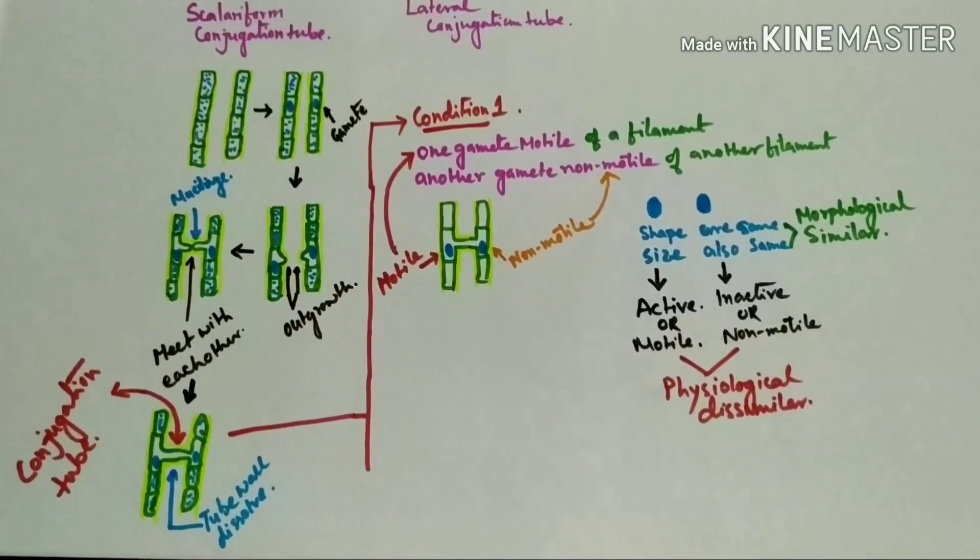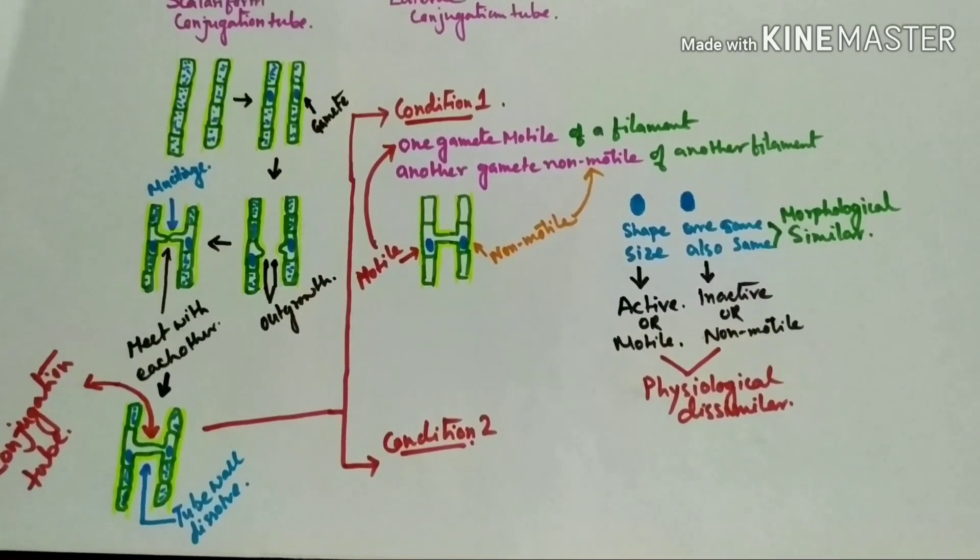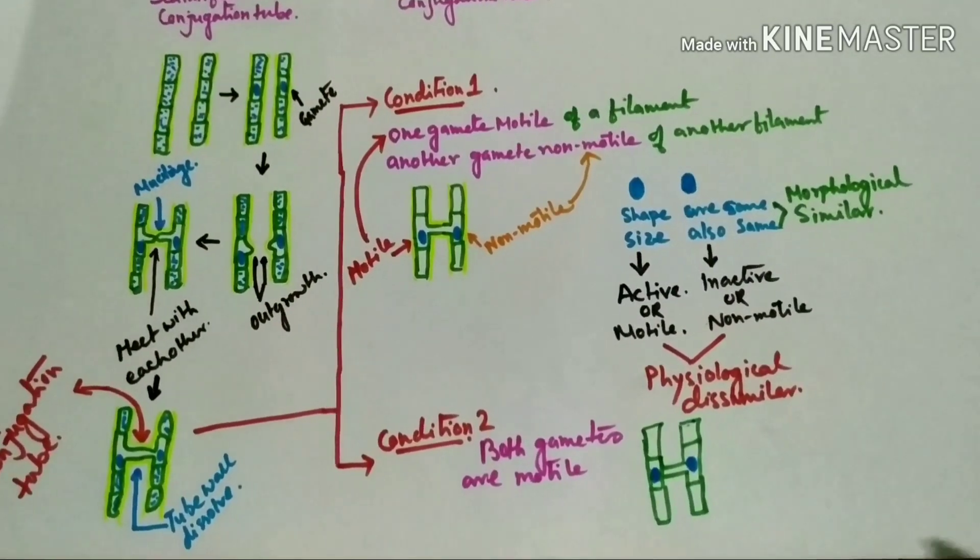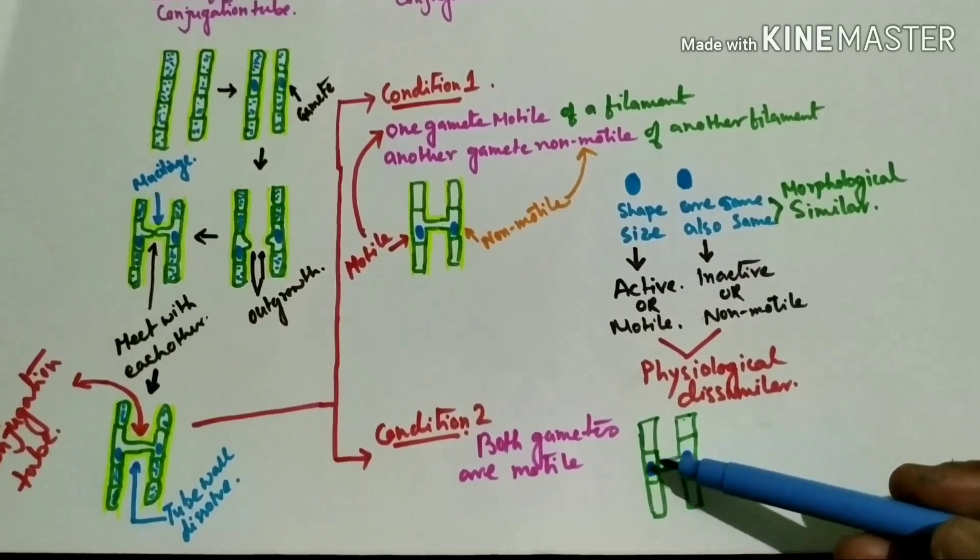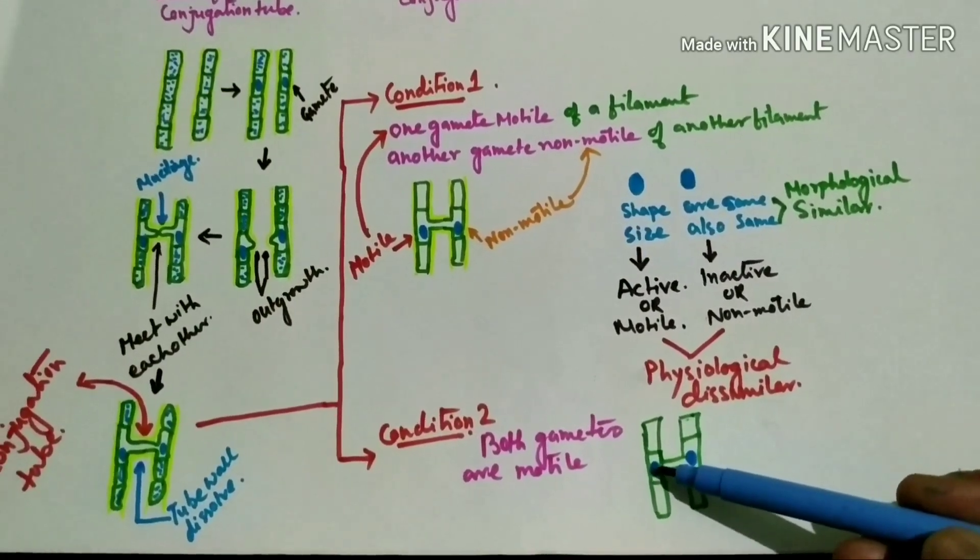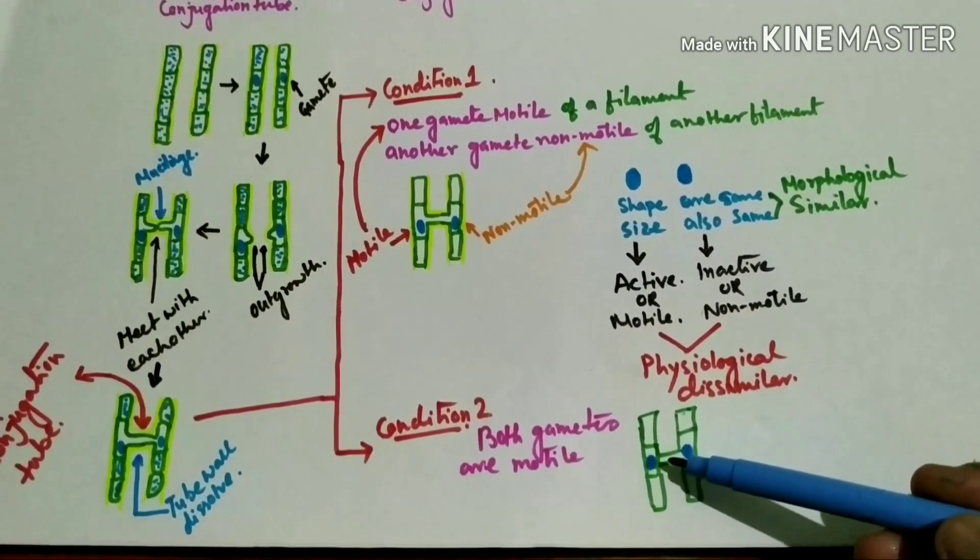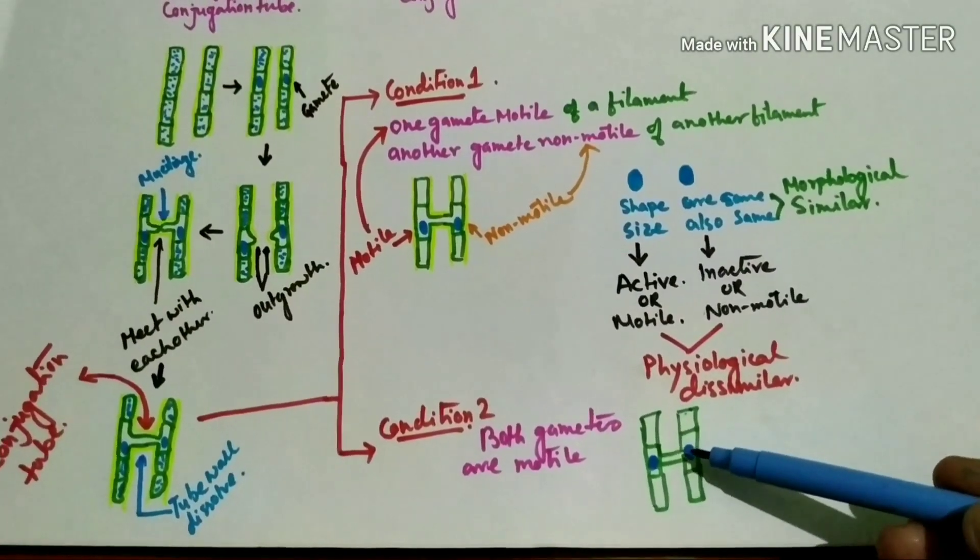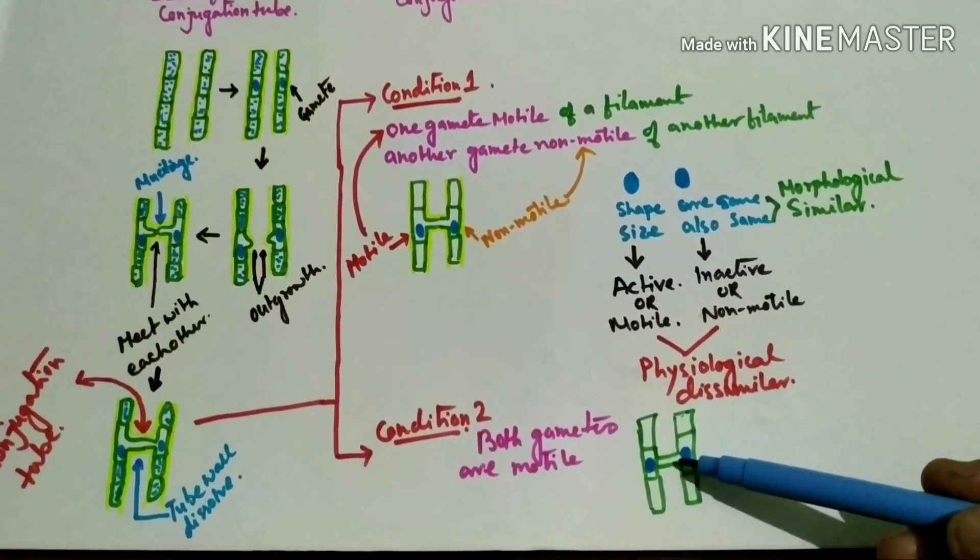Now condition 2: both gametes are motile. So in this case, this gamete is motile so it can also pass from this conjugation tube, and this gamete is also motile, so this can also pass from this conjugation tube.